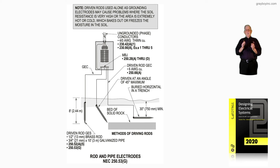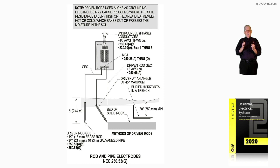To ensure you have an effective ground fault path throughout the system, review circuits run together to lower the impedance. Reference 250.4A5, 250.134B, and 300.3B, then size all equipment grounds from table 250.122 — that's load side, based on the overcurrent device ahead of your conductors. Supply side grounding is sized from table 250.102C1. That's basically what figure 16-74 is illustrating.